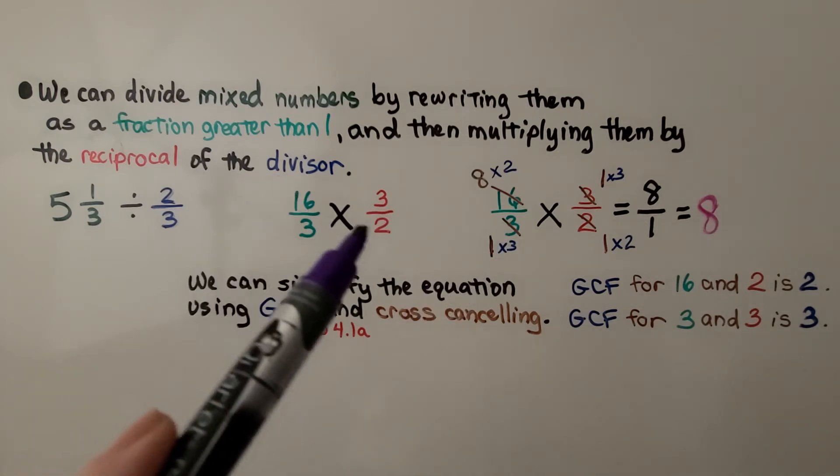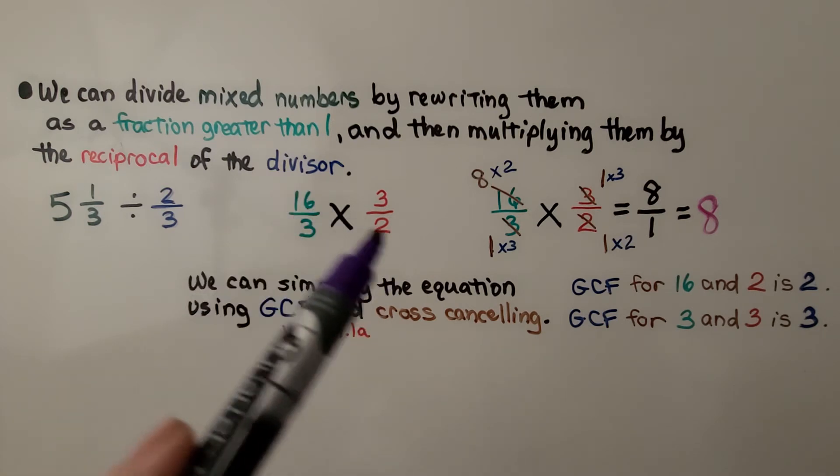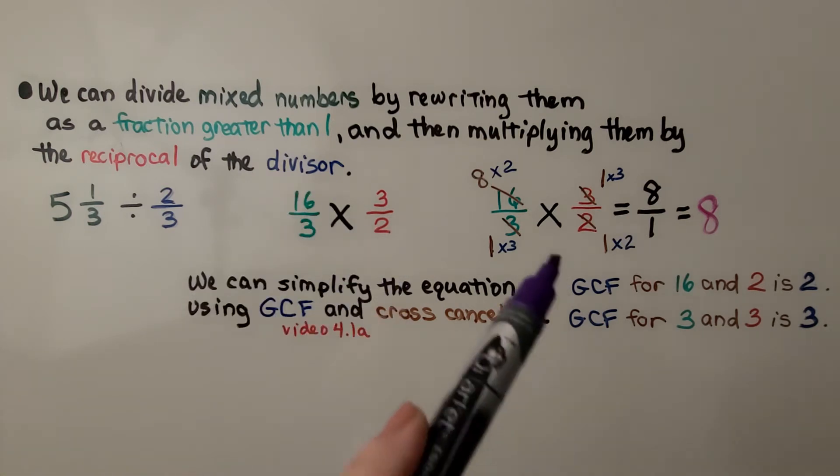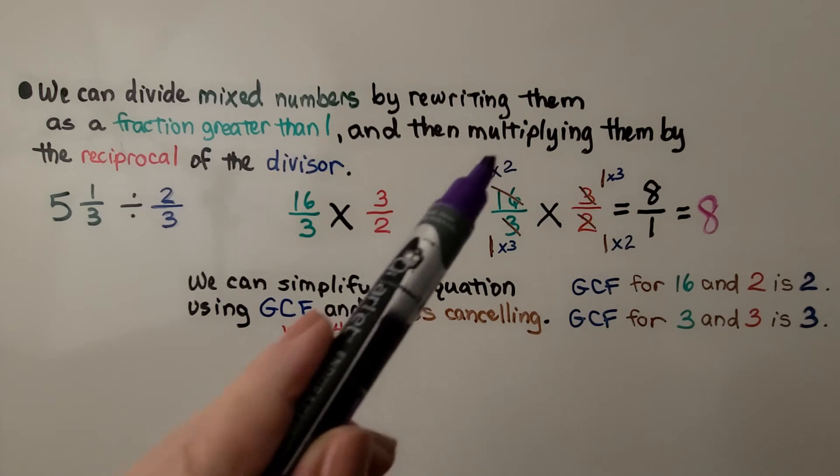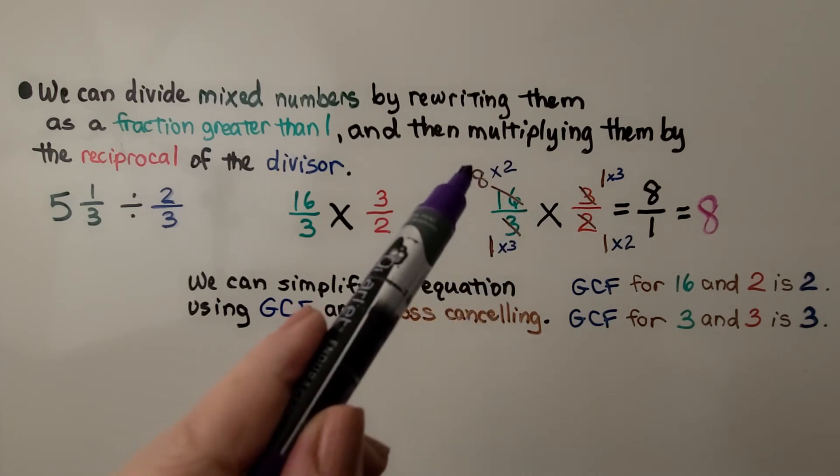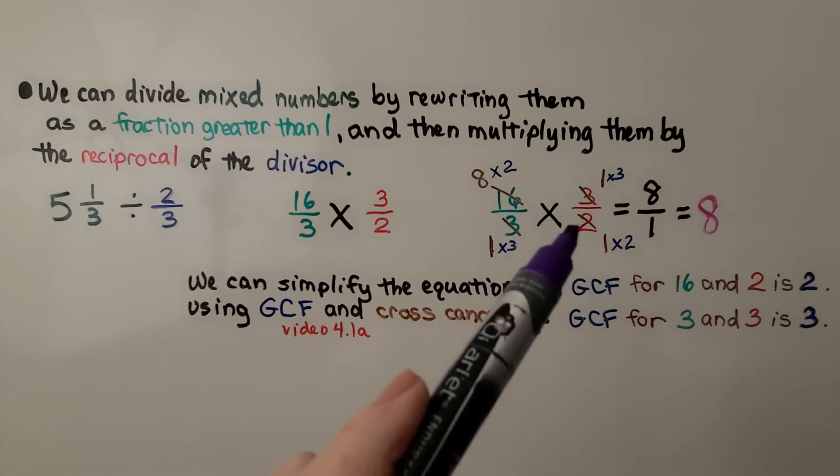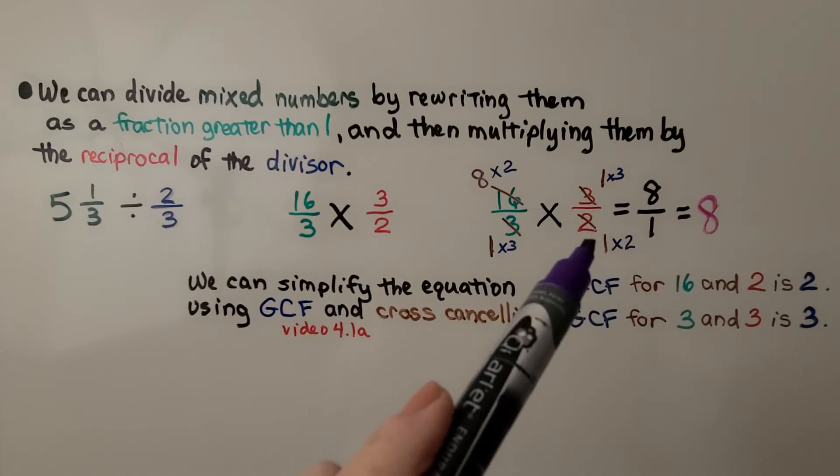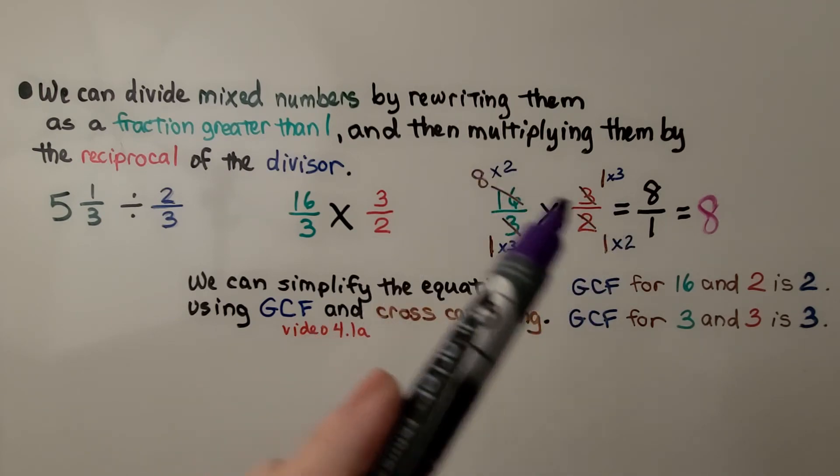Now, we can multiply straight across, or we can use GCF and cross-canceling to simplify the equation first. We have 16 and 2, their greatest common factor is 2, so we simplify 16 to 8 and 2 to 1.